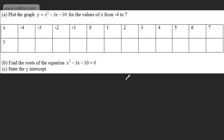Don't be tempted to get a ruler and connect the points up with straight lines. So what we're going to do, we're going to plot the graph of y equals x squared minus 3x minus 10 for the values of x from negative 4 to positive 7.